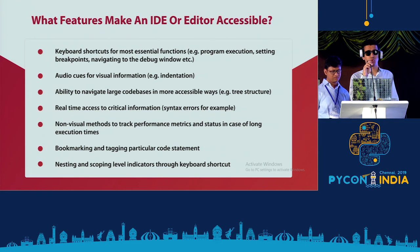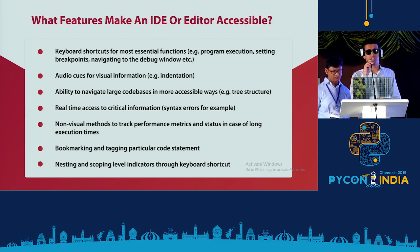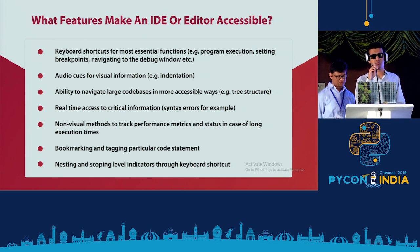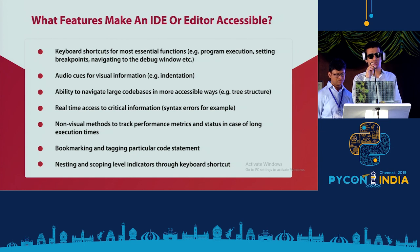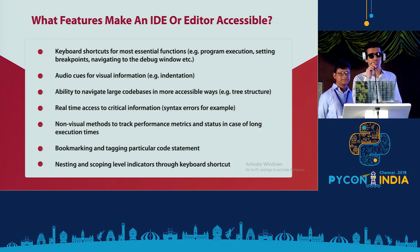Suppose you are reading a very large codebase. As a sighted developer, you can fold a piece of code and get a high-level overview. But because the screen reader reads everything linearly, visually impaired users must read line by line, which is very time-consuming. One solution could be presenting code as a tree or hierarchical structure where you can expand or collapse nodes, and also have a bookmarking and tagging feature to return to a specific location.